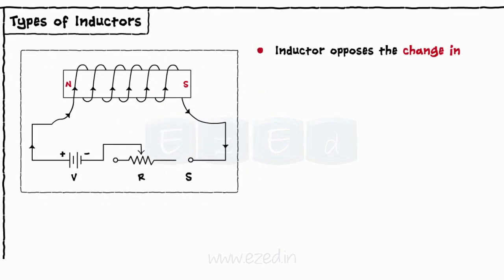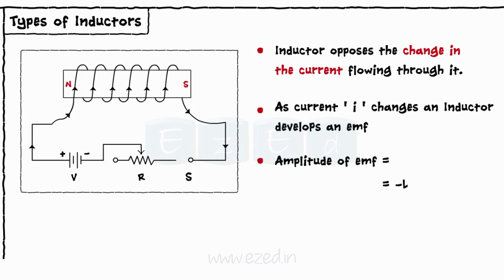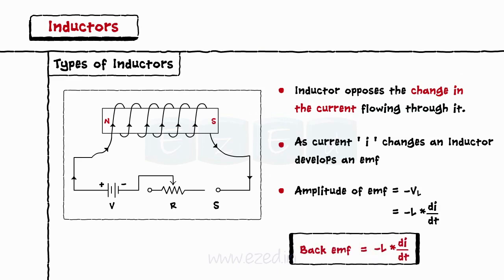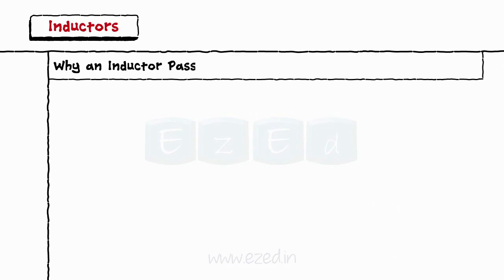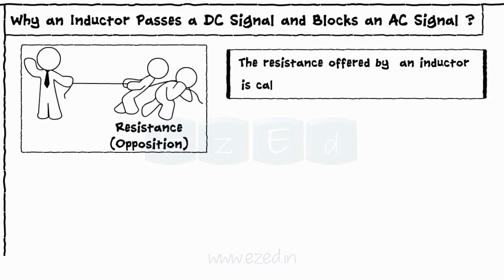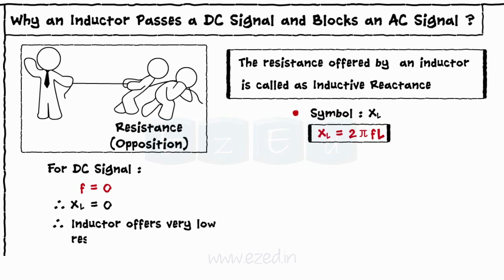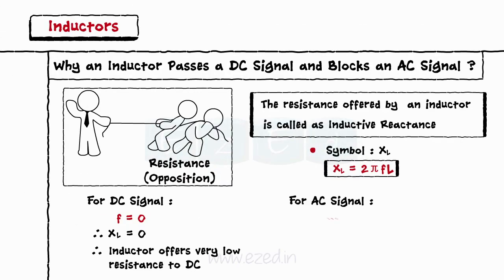An inductor is a component that opposes the change in the current flowing through it. Hence, whenever the current flowing through an inductor changes, the inductor develops an EMF which opposes this current. The amplitude of this EMF is exactly equal and opposite of VL. This is known as back EMF. The resistance offered by an inductor is called inductive reactance, denoted by XL, given by the formula XL equals 2πFL, where F is the frequency. The frequency of a DC signal is zero, so XL becomes zero and the inductor offers very low resistance to DC. But the frequency of an AC signal is non-zero always. Thus, an inductor opposes the AC signal and passes the DC signal only.